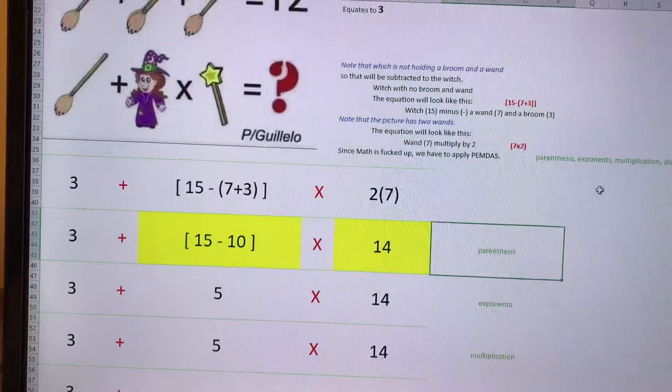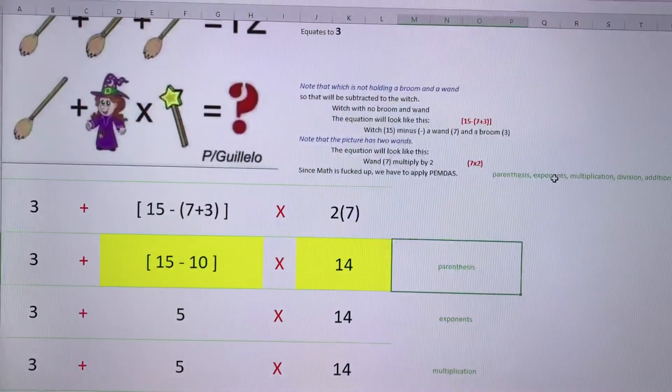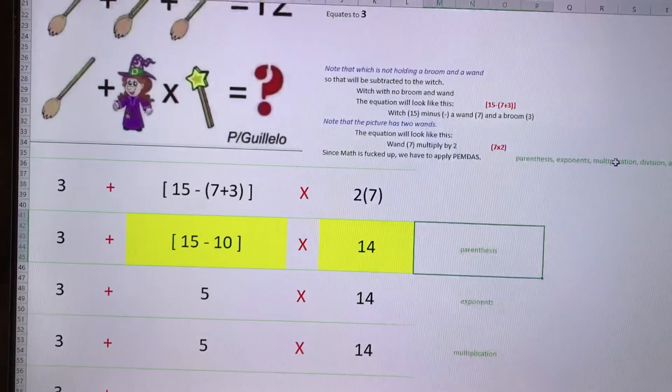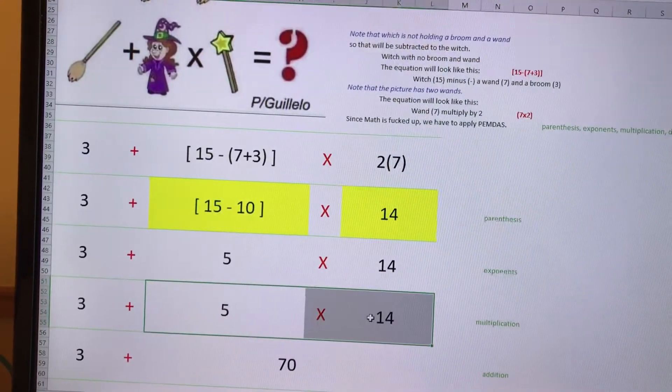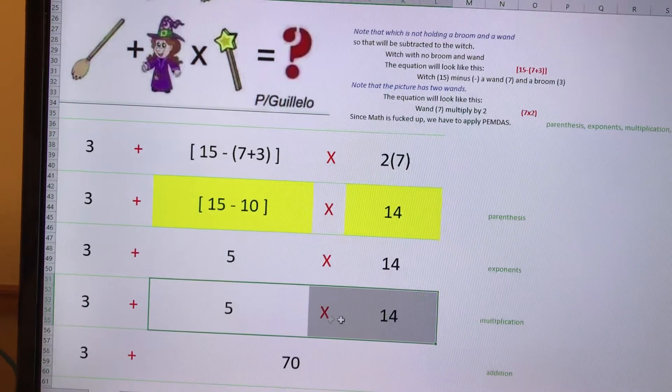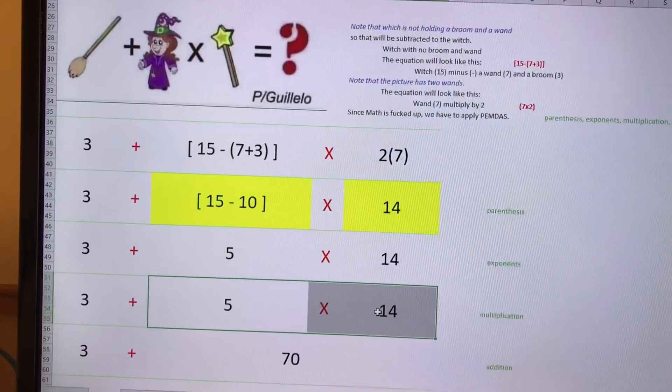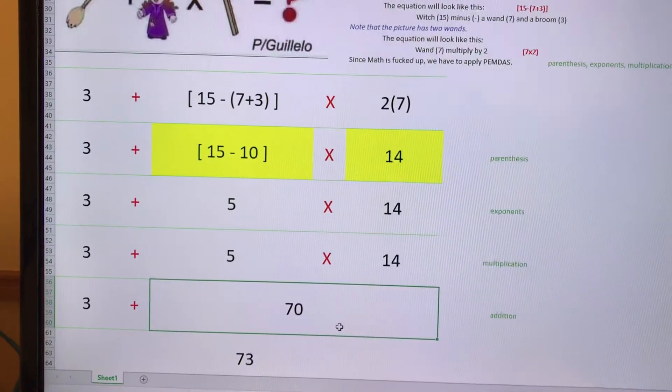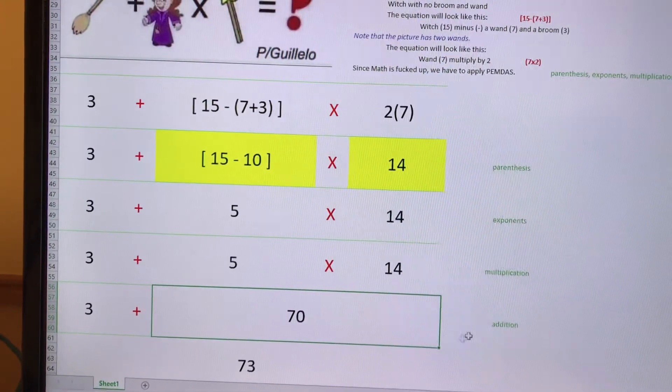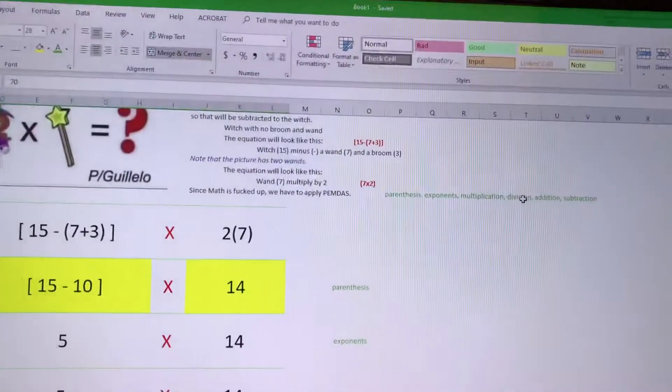Then multiplication, which I already also did. So multiply this two, so 5 times 14 is equal to 70. And the next one is after multiplication there's no division, so next is addition.